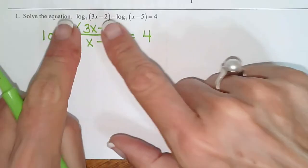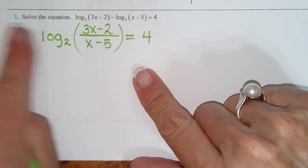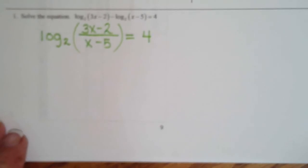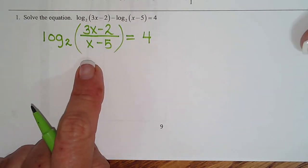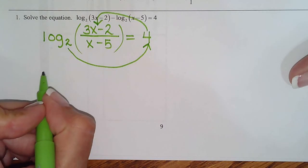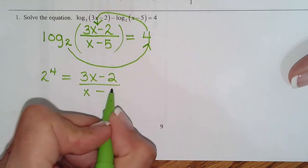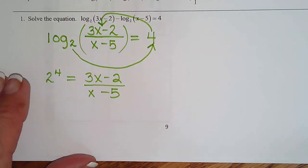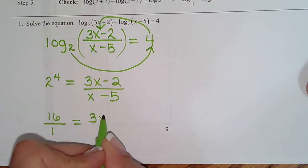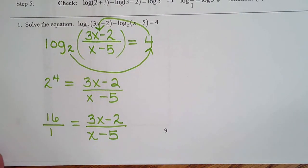Step 3 is loop and swoop. I don't know how to solve an equation with a log — I need to turn it into an exponential. So loop and swoop: 2 to the 4th equals the argument (3x minus 2) over (x minus 5). 2 to the 4th is 16. And remember, if one side is a fraction, make the other side a fraction too. So 16 over 1 equals (3x minus 2) over (x minus 5). We'll pick up from there in the next video.